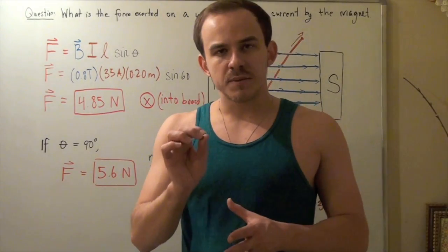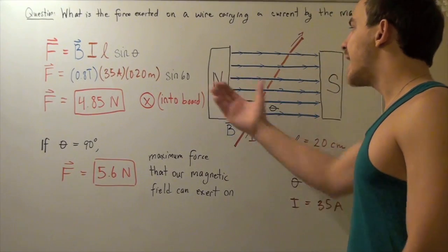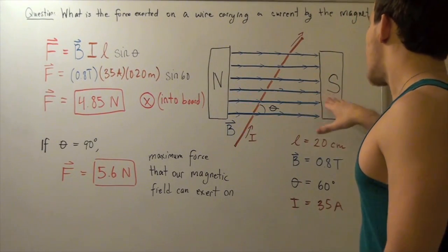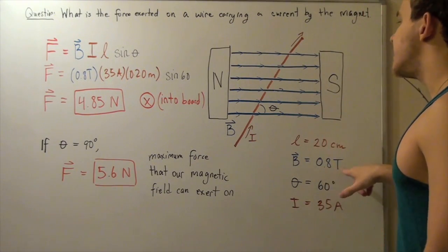So, in this example, we're going to be dealing with the following experimental setup. Suppose we have a magnet with a north pole and a south pole, and this magnet creates a magnetic field of 0.8 teslas.